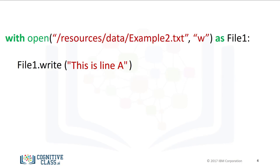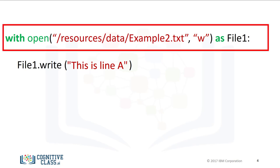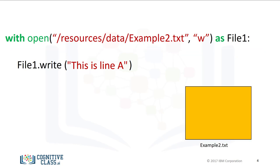As before, we use the with statement. The code will run everything in the indent block, then close the file. We create the file object file1. We use the open function. This creates a file example2.txt in your directory.